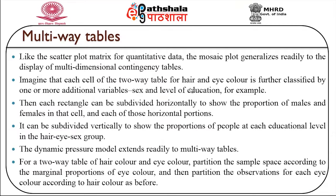The next topic is multi-way tables. Like the scatter plot matrix for quantitative data, the mosaic plot generalizes readily to the display of multi-dimensional contingency tables. Imagine each cell of a two-way table represents a hair and eye color and is further classified by additional variables such as sex and level of education. Each rectangle can be subdivided horizontally to show the proportion of males and females in that cell, and each horizontal portion can be subdivided vertically to show the proportion of people at each educational level.